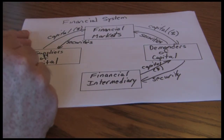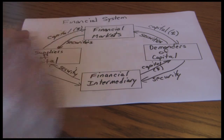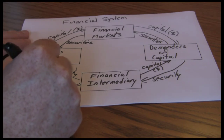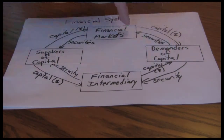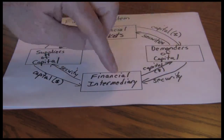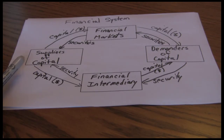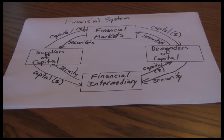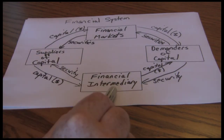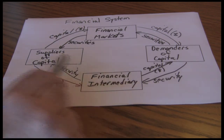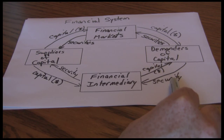The bank gets its money from suppliers of capital. Suppliers of capital provide capital to the bank and receive a security in exchange. A key difference from financial markets: in financial markets, the security flowing in is typically the same as the security flowing out. In a financial intermediary, the security flowing in is often very different from the security flowing out. In the car loan example, suppliers of capital aren't directly buying the car loan — instead, they may have checking accounts, savings accounts, or certificates of deposit at the bank. The intermediary transforms the types of securities it provides.